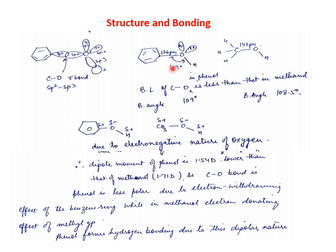The bond angle observed in phenol is 109°. Compared to alcohols, the bond angle in alcohols is smaller at 108.5°. Even the C–O bond length in phenol is less than in aliphatic alcohols — taking methanol as a comparison, the bond length in phenol is shorter. Because oxygen is electronegative, a dipole moment is observed. The dipole moment of phenol is 1.54 debye, whereas in methanol it is 1.71 debye.